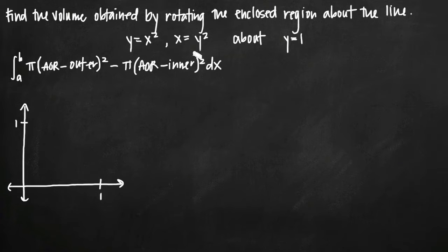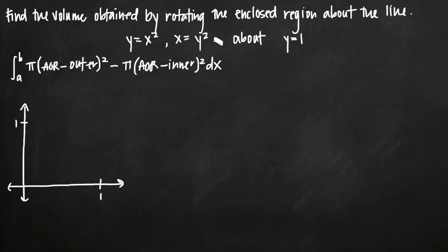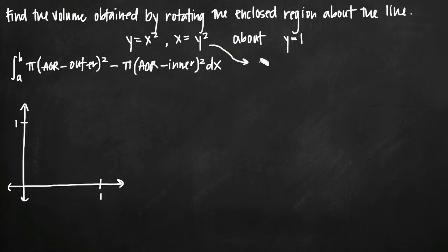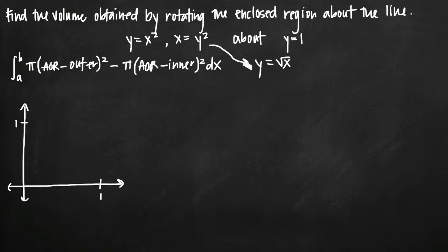Before we do that, it's easiest to solve both equations in terms of y. We already have y equals x squared, but if we solve the second equation x equals y squared for y by taking the square root of both sides, we get y equals the square root of x. Now we have two curves defined for y in terms of x.